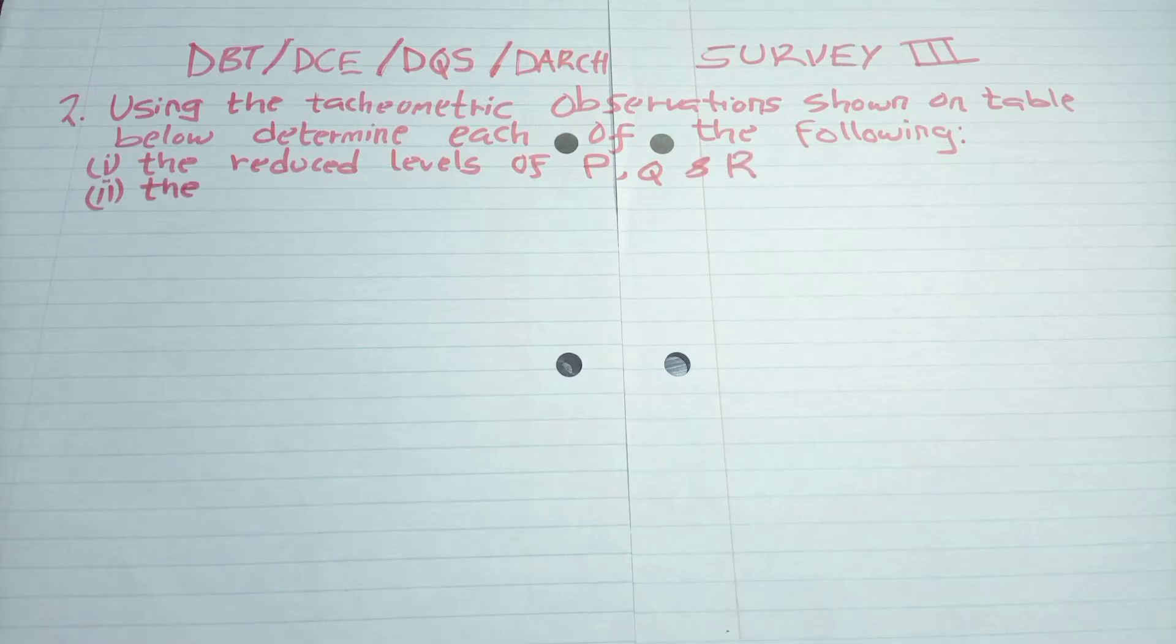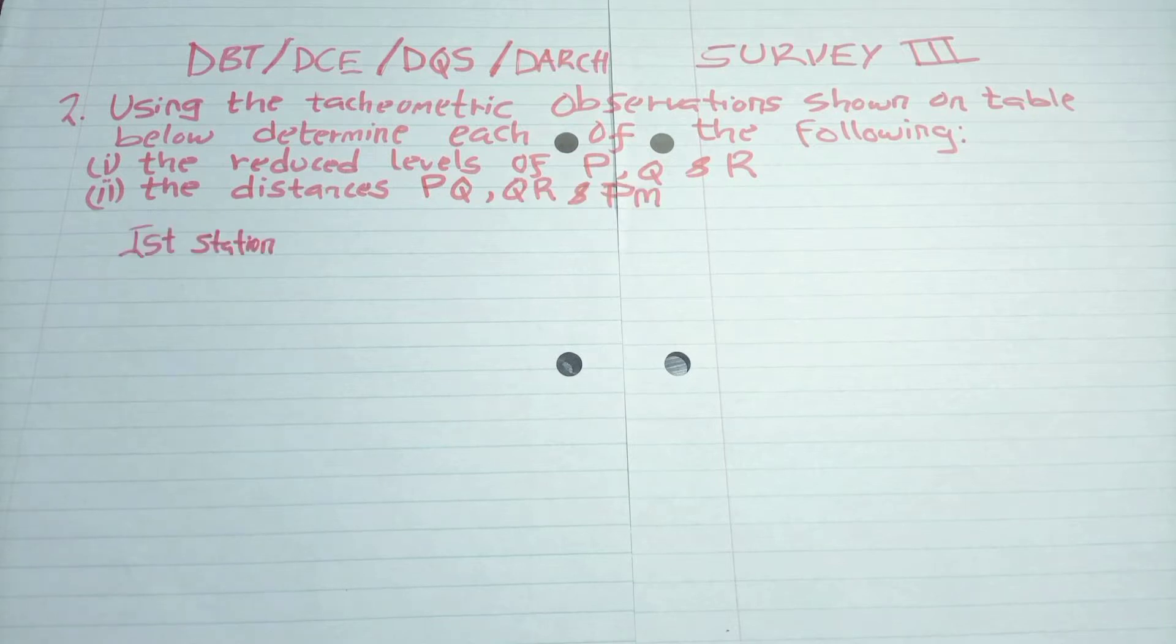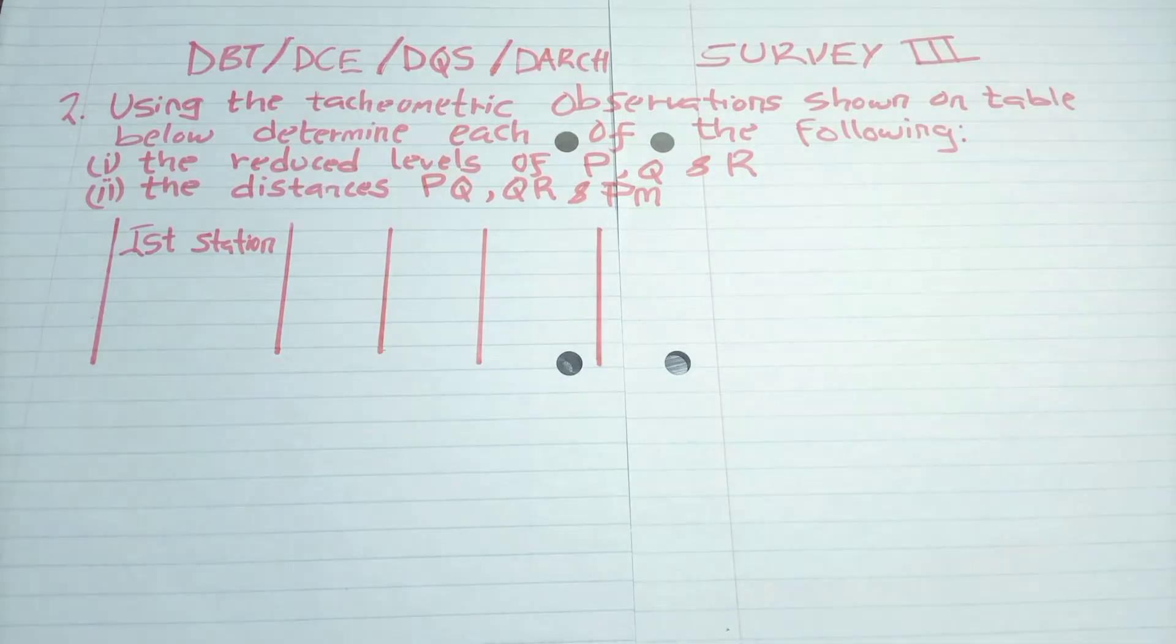And then the second is the distances P-Q, Q-R, and P-M. So then we have a table. So that is the instrument station.